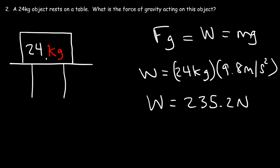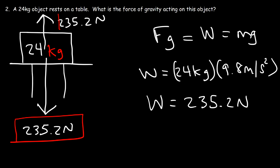So Earth's gravity is pulling down on this object with a force of 235.2 Newtons. The table exerts an upward force of 235.2 Newtons as well. Because the object is at rest. It's not moving. So the net force acting on the object has to be zero. So therefore, the weight force of the object and the force that the table exerts on the object has to balance out if the object is at rest.